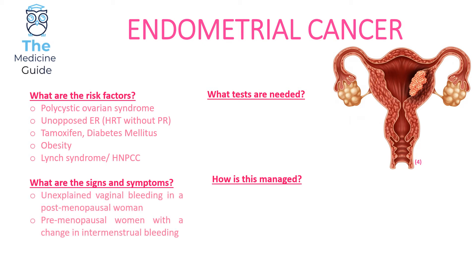The signs of endometrial cancer involve unexplained vaginal bleeding in a post-menopausal woman, or a pre-menopausal woman who has a change in her menstrual bleeding. Endometrial cancer is typically found in older women, so the general rule is: any unexplained vaginal bleeding in a post-menopausal woman is endometrial cancer unless proven otherwise.